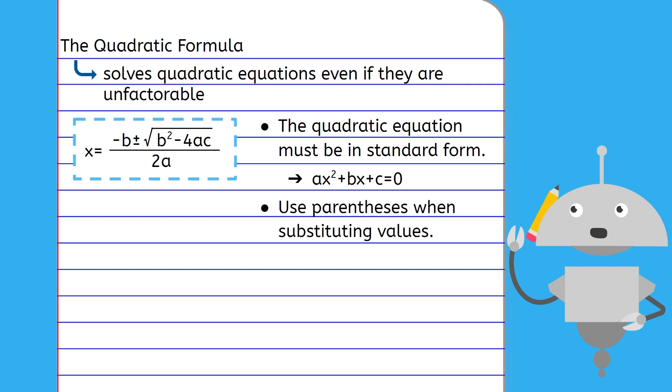Next, when substituting in your a, b, and c values, always use parentheses around any substituted values to help you keep track of your positive and negative values. Finally, if while solving you find yourself with a non-perfect square under the radical, just simplify the square root as much as possible.